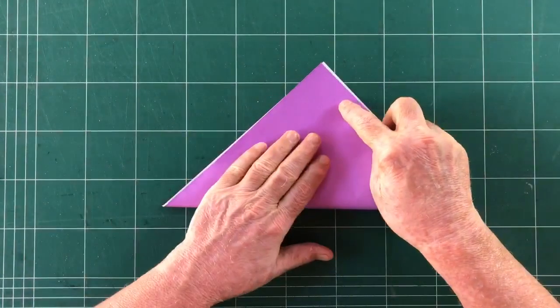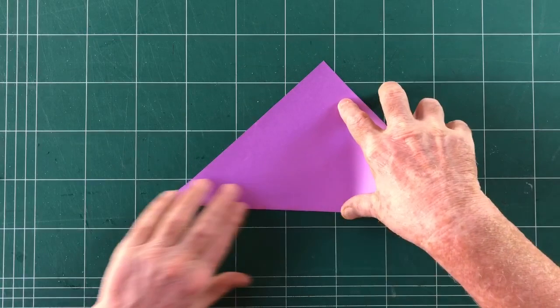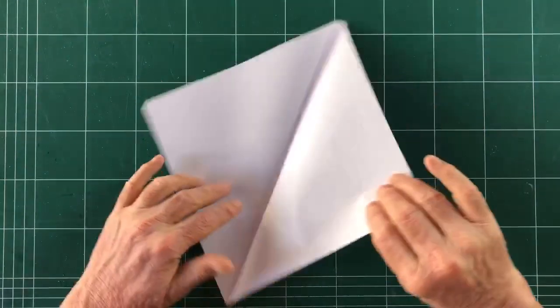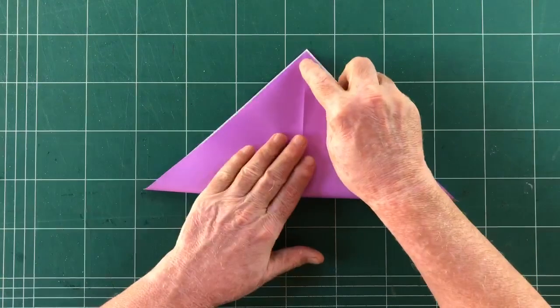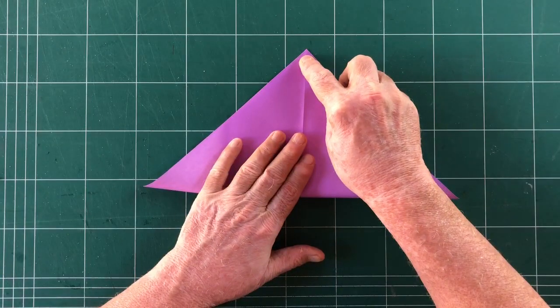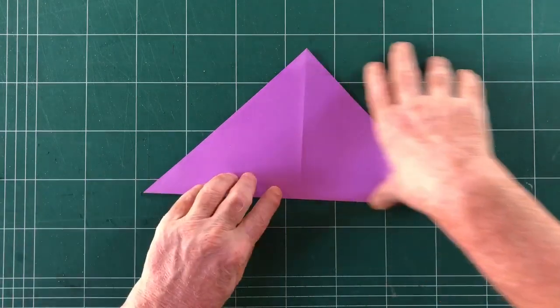White side up, fold in half, make a triangle. Pretty standard beginning and again this way.